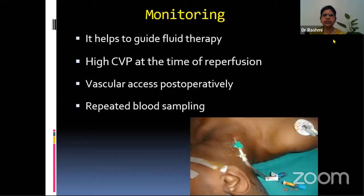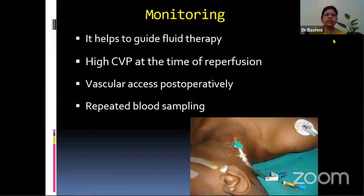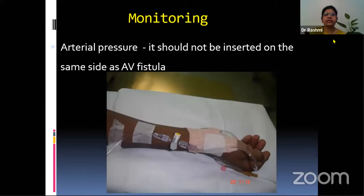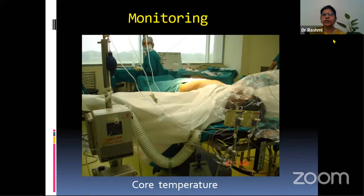Perioperative management has to be individualized. Besides the routine monitor, we insert a central venous cannula to help guide fluid therapy. It must be done with absolutely aseptic precautions because these patients are immunosuppressed. We like to maintain a high CVP at the time of reperfusion. It also provides good vascular access post-operatively, allows us to avoid multiple intravenous lines, and enables repeated sampling. An intra-arterial line is inserted intraoperatively after anesthesia is induced, on the side opposite to where the AV fistula is present.